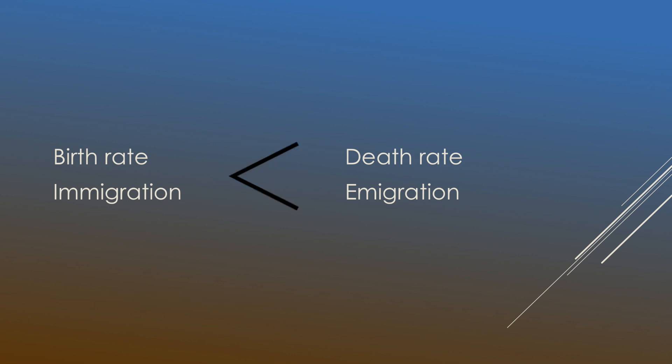Now let's take the opposite scenario. If the death rate and the rate of emigration are larger than the birth rate and the rate of immigration, this means more people are dying and leaving a population than are being born or entering it. As a result, the population size will decrease.